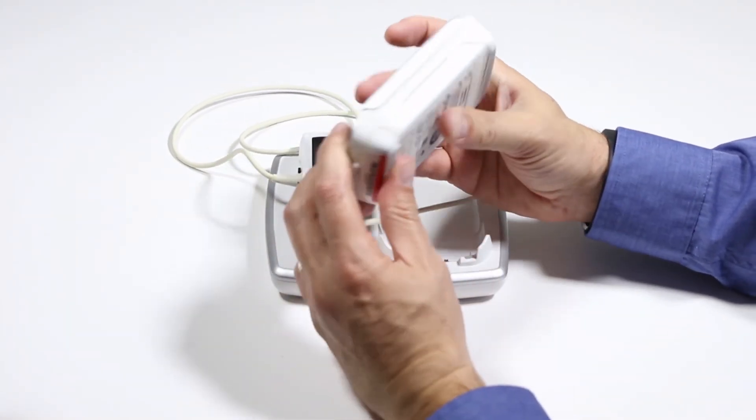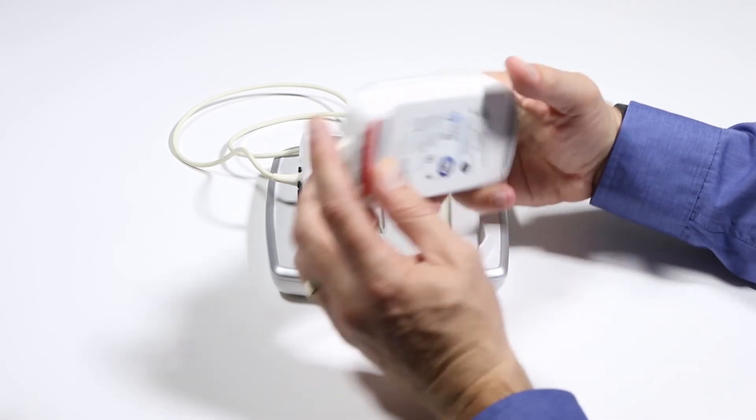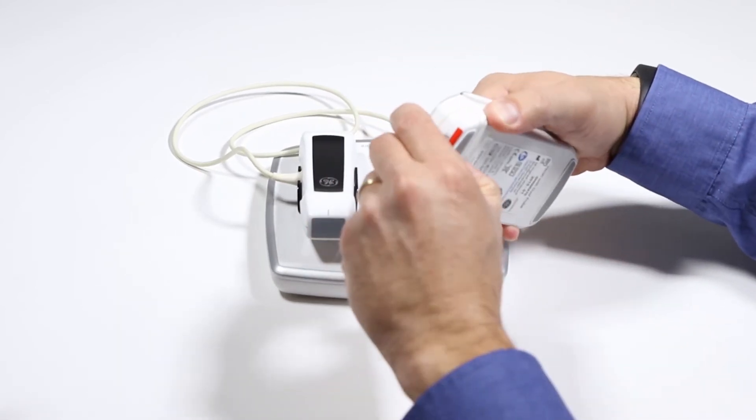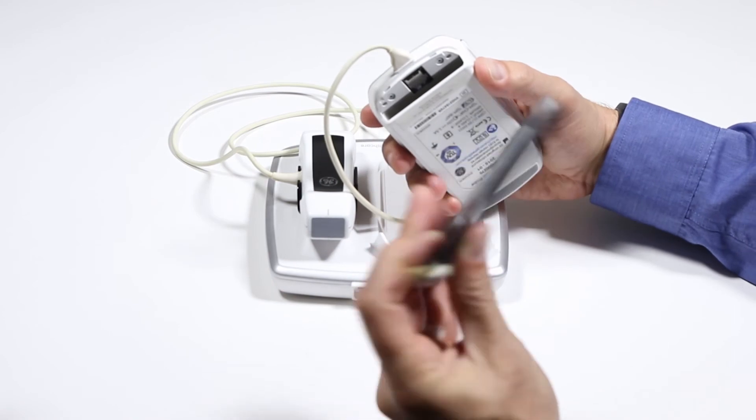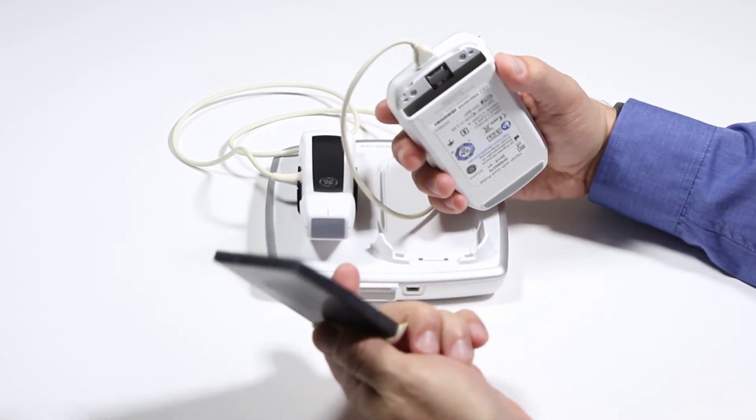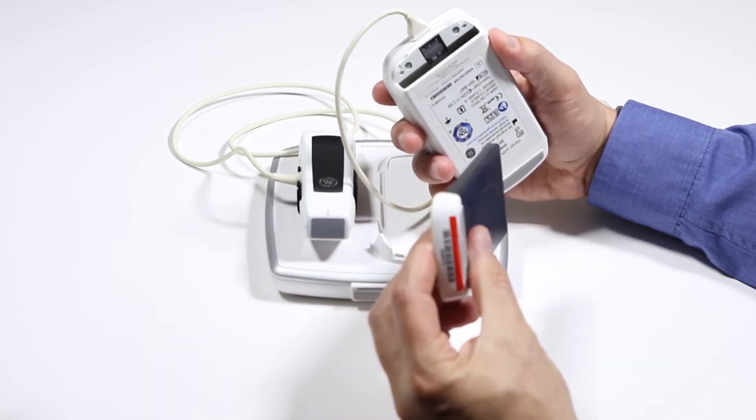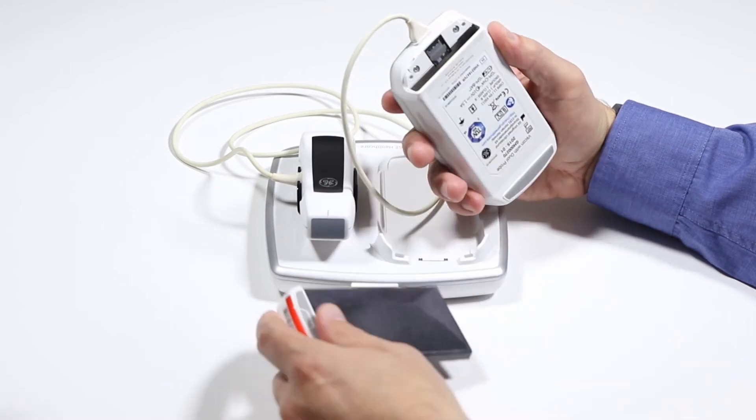Back here you have a compartment for your battery where you can just push down, slide out, and if you get an additional battery you can add that on and swap out batteries so you don't miss.